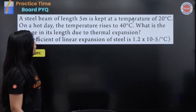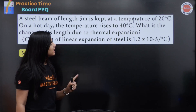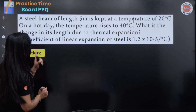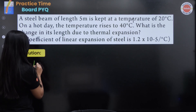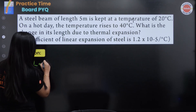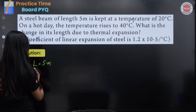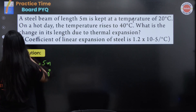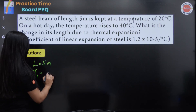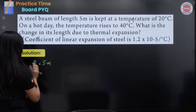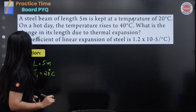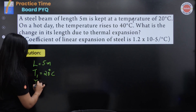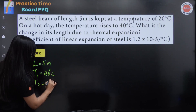A steel beam of length 5 meter is kept at a temperature of 20 degrees Celsius. So, here we get the information. Length L is equal to 5 meter. Temperature T1 is equal to 20 degrees Celsius. On a hot day, the temperature rises to 40 degrees Celsius, so T2 will be equal to 40 degrees Celsius.